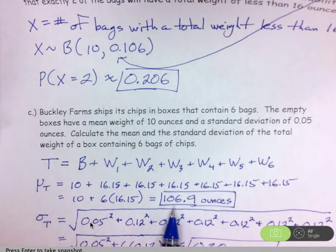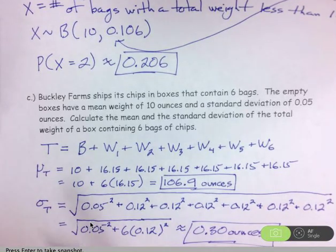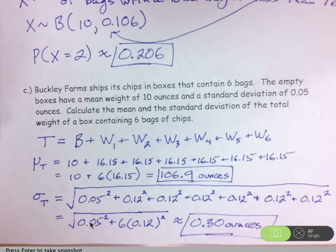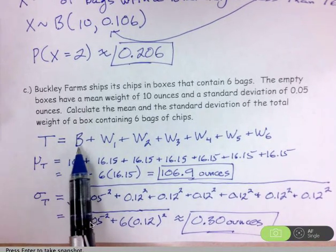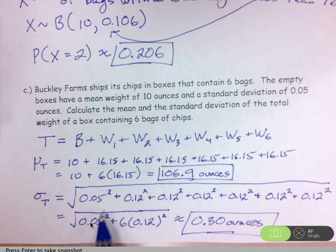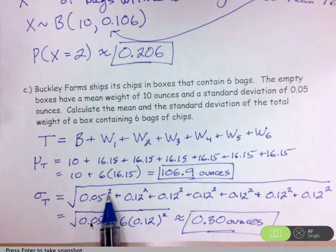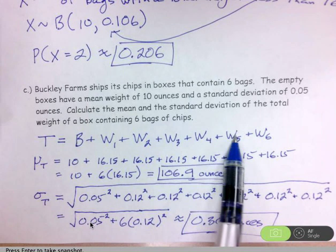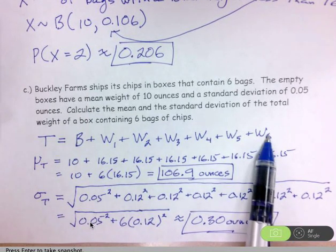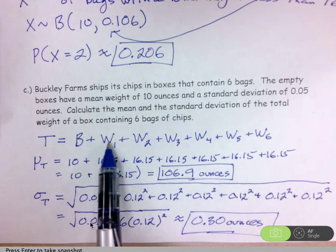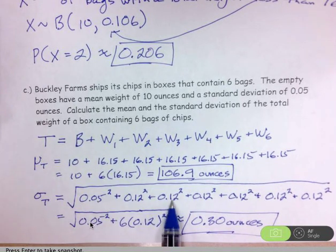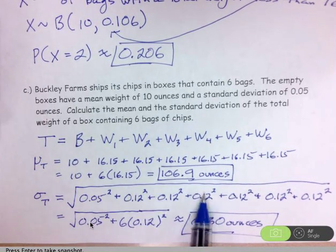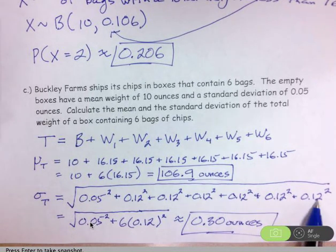And then for the standard deviation, I need to deal with the standard deviation of the box. That's the 0.05, but I need to square that to form a variance. And I want to combine that then with these six variances also. The 0.12 squared for the first bag of chips, the 0.12 squared for the second bag of chips. I want to do that for all six bags of chips.